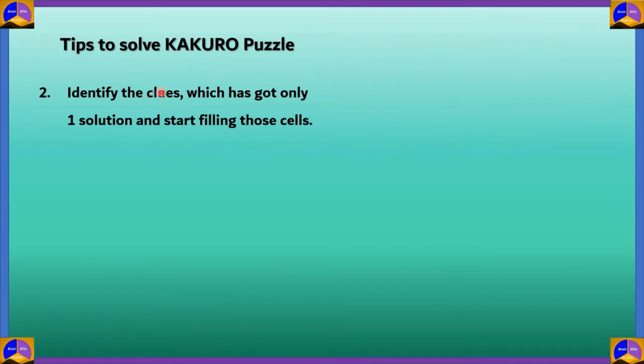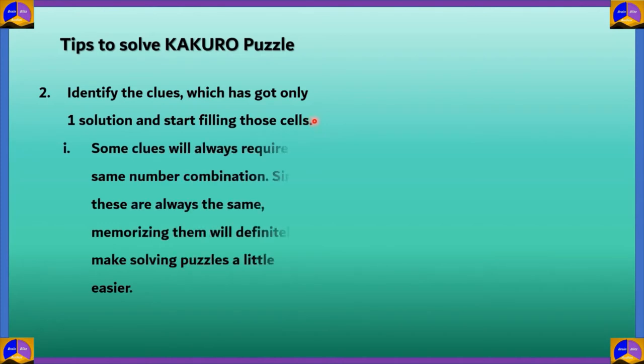Other important tip includes identifying the clues. When you're identifying clues, check and look out for clues which only require one solution and start filling out those cells. Some of these clues will always require the same number combination. For some clues, you will always have to write, for 4, you'll always have to write 1 plus 3. You can't write 2 plus 2. It can be 1, 3 or 3, 1, but again, the sum will always give you 4. Some of these clues always require the same number combination. Since they're always the same, it's good to memorize some of these.